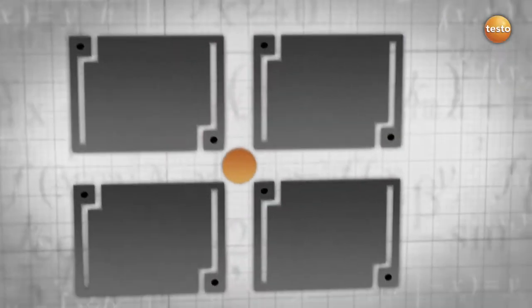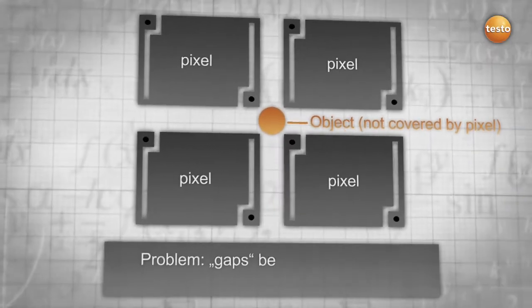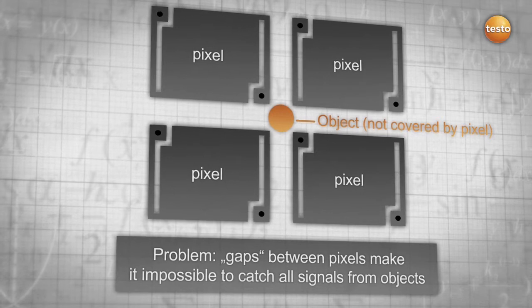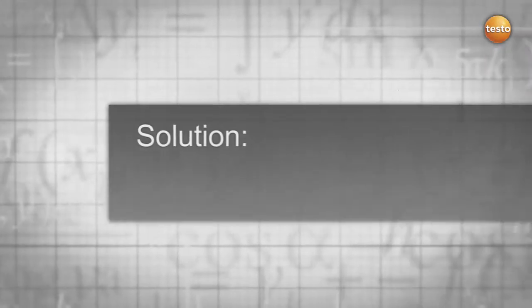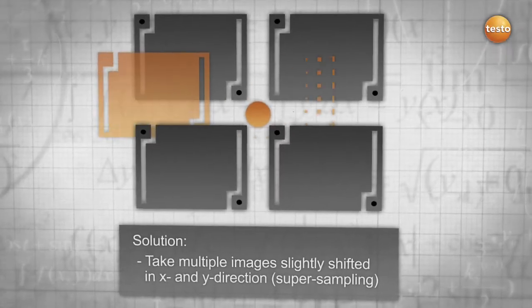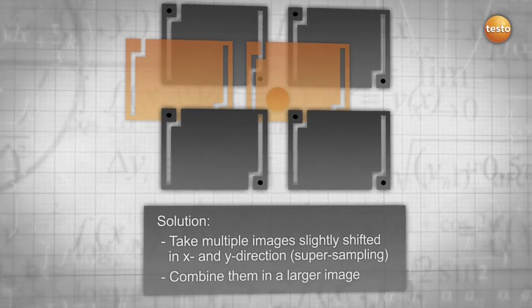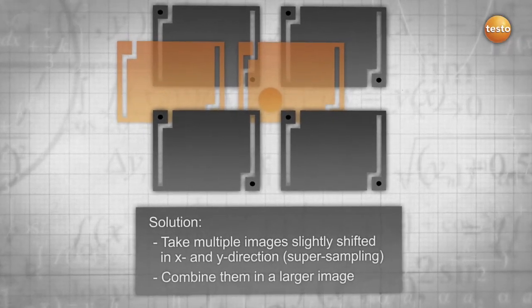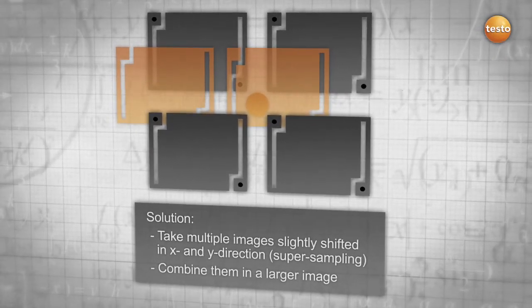One of the main problems with detectors are the gaps between each pixel. Through these gaps, it is almost impossible to catch all signals emitted by objects laying in between pixels. Super sampling provides a solution to this problem since the advanced technology takes multiple images, slightly shifts them, and combines them into one larger image. This technology enables you to record more signals and results in more accurate measurement and more pixels.